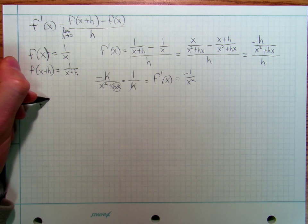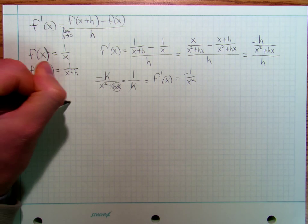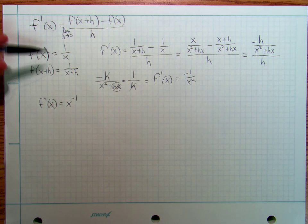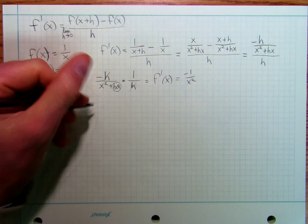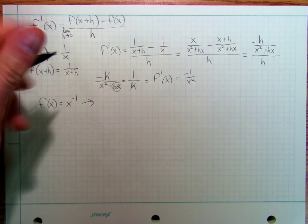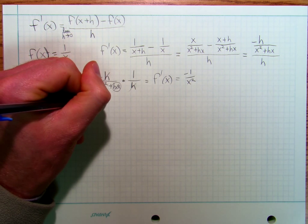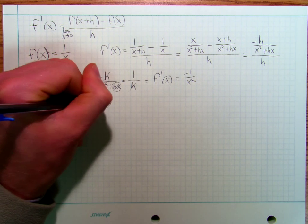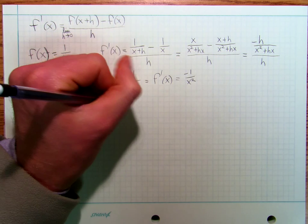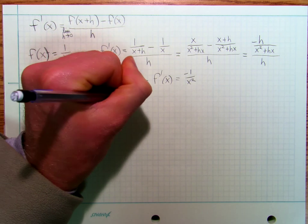I'm going to say f of x is equal to x to the negative 1. That's another way to write this function. And I'm going to say that gives me f prime of x is equal to negative x to the negative 2.